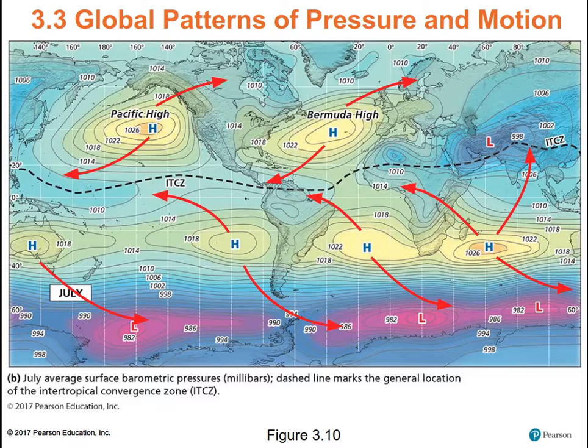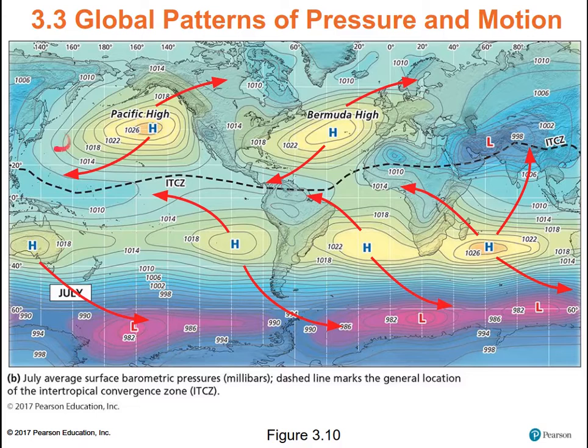In July, the ITCZ shifts north. There's high pressure over the ocean, so we've got air blowing over the ocean picking up moisture, bringing the really intense Asian monsoon, rainy conditions. For California, the Pacific high is going to block all the storms. Whatever storms would come off across the Pacific from Japan are going to get bumped up into British Columbia.